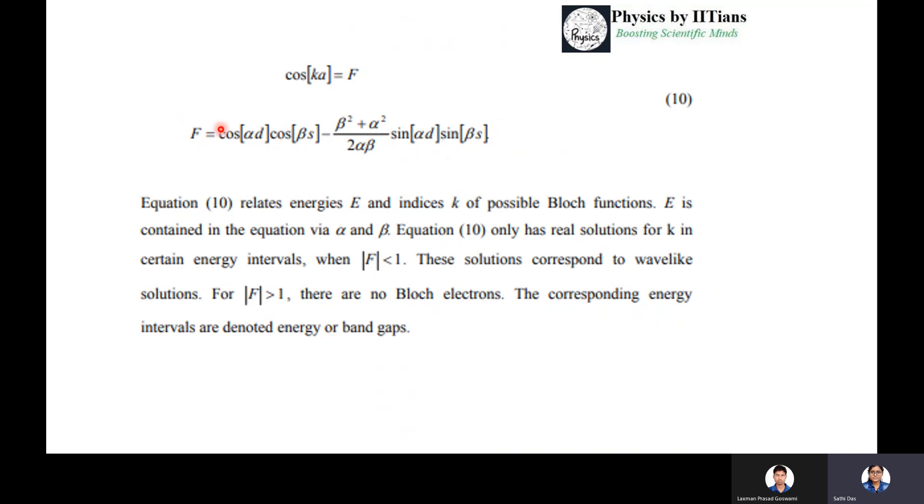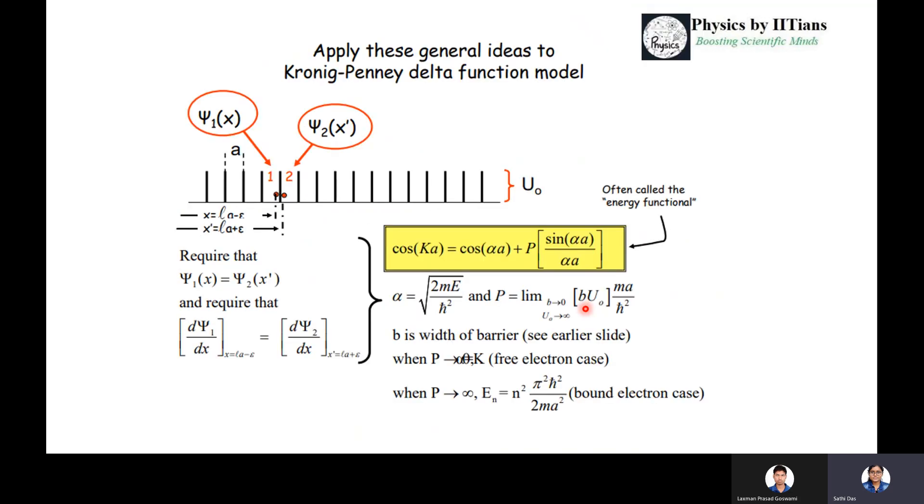After solving the Schrödinger equation, we need to find the E-k relation, the dispersion relation. This equation will give us the E-k relation and the related energies E and indices k of the possible Bloch functions. E is contained in this equation via the α and β terms. Equation 10 has real solutions for K in certain energy intervals when this value is less than 1. This solution corresponds to wave-like solutions. If |F| is greater than 1, there will be no Bloch function. These energy intervals are denoted as energy gaps or band gaps.